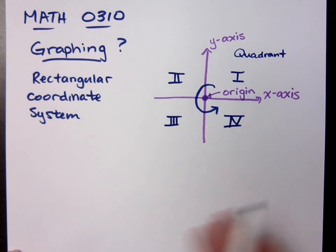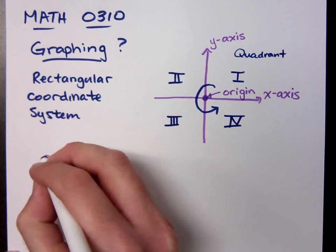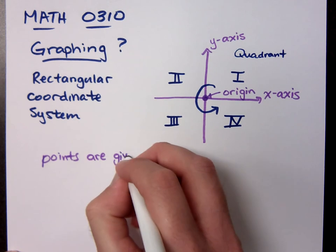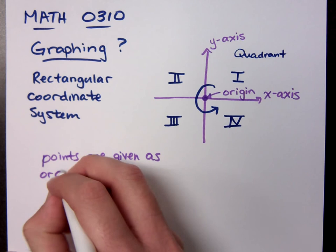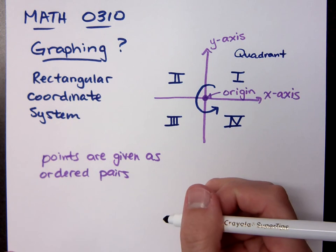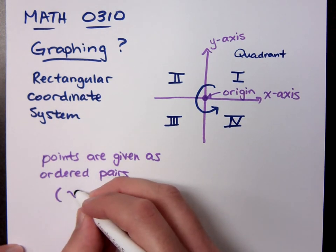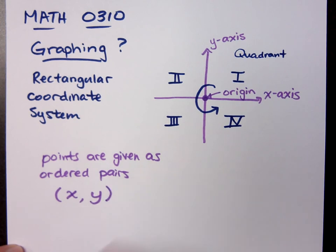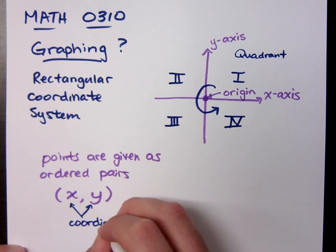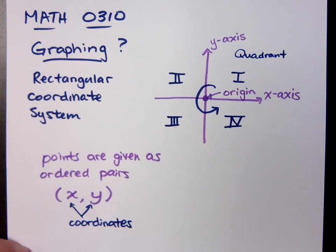And when we talk about this, we also want to talk about ordered pairs. We need to remember this. The points are given as ordered pairs. When we talk about ordered pairs, we're, of course, talking about this, just like we had before. You have your x and you have your y-coordinate. Remember these guys are coordinates. Make sure you know the proper words here, so that when we talk about them, you're not confused.